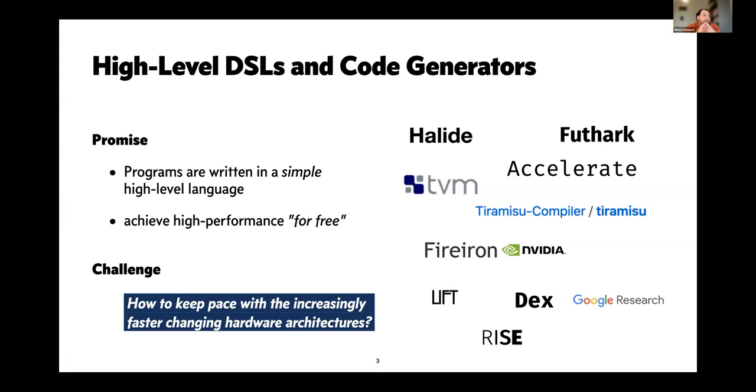These together give this appealing promise that we write programs somehow in a simple—whatever that really means—but a simple high-level language, and then we achieve the high performance, at least from the application developer's perspective, kind of for free. There are a huge number of these types of GPU-specific projects that I've mentioned here on the right: stuff like Halide that's been around for over a decade, Futhark, which is a high-level GPU programming language, Accelerate, and TVM, a machine learning compiler. We have academic work like Tiramisu Compiler and the project called Lift, which is a language I was involved in.